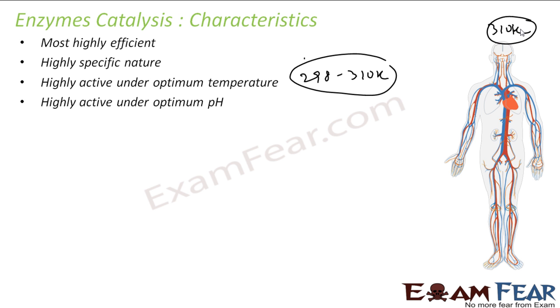They also require an optimum pH. Since our body has an optimum pH — not very acidic nor very basic — enzymes work in the pH range of 5 to 7.